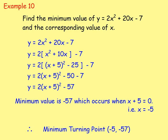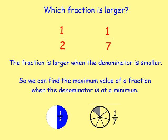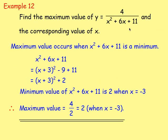One example was the same but required completing the square first to get into the (x ± p)² + q form. We then thought about this with fractions: a fraction is larger for a lower denominator, so half is larger than a seventh. Therefore, the maximum value of a fraction occurs when the denominator is at a minimum. For y equals 4 over (x² + 6x + 11), complete the square on the denominator — minimum value is 2 when x equals -3 — so the maximum value of the fraction is 4 divided by 2, which equals 2.